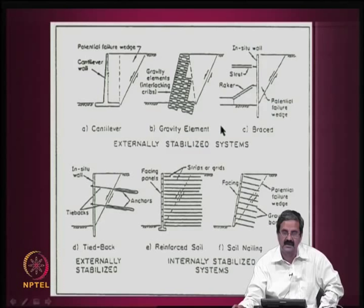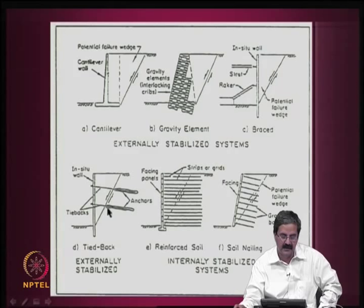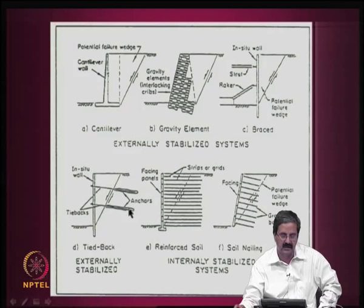Another externally stabilized system is the tied-back wall. The failure mass exerts a weight, and we put anchors — tensile elements called tie-backs — that hold the wedge. The tension member holds this wedge, and we anchor it where bond resistance is higher. Once you do this, the pressure coming on the facing is quite less. This is called an in-situ tie-back wall.